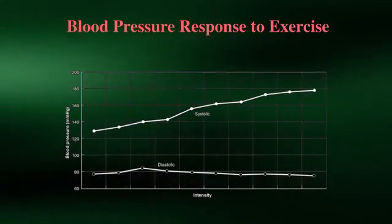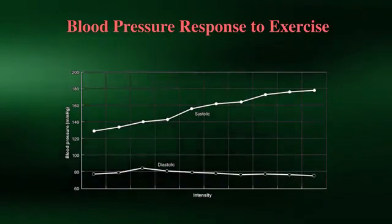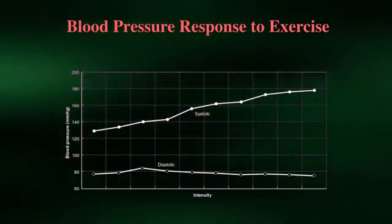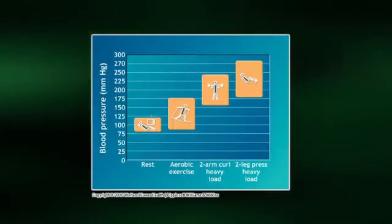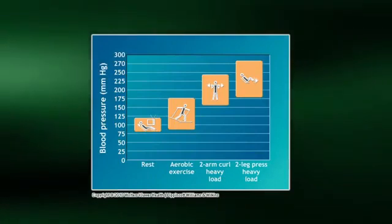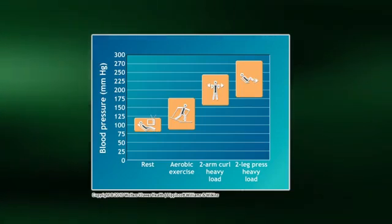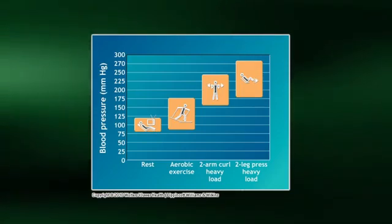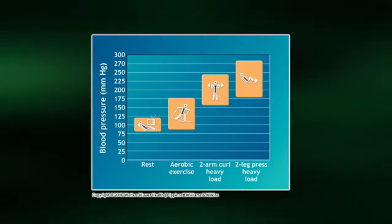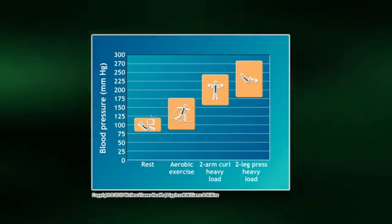Now let's examine the blood pressure response during a bout of exercise. Systolic blood pressure increases steadily with an increase in exercise intensity, while diastolic pressure remains stable. These are normal responses in healthy individuals. However, when individuals engage in intense or heavy weight training involving large muscle groups, systolic blood pressure can increase to well above 250 millimeters of mercury. For young, healthy individuals, this transient increase in blood pressure is generally not a problem. However, for individuals with cardiovascular disease, such an elevation in blood pressure could be dangerous, placing a great strain on the heart.